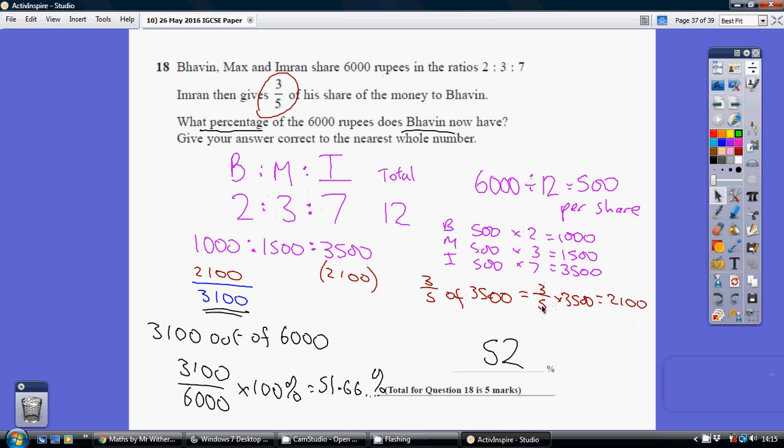You can just literally have your 3/5 in there times 3500, which is 2100 rupees. We've got to take that off Imran's total but add it on to Bovine. How much has Bovine now got? Well, he had 1000 rupees to start with.